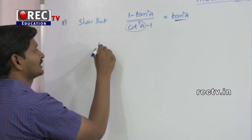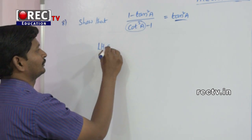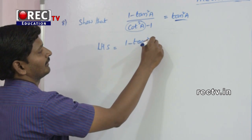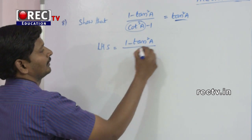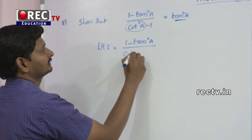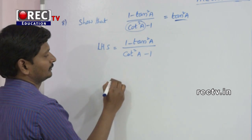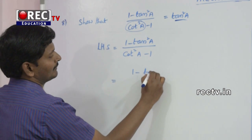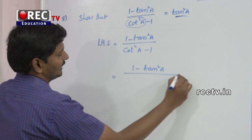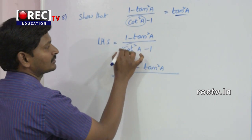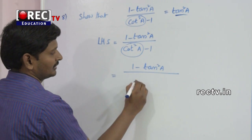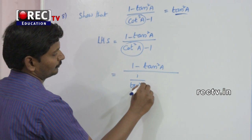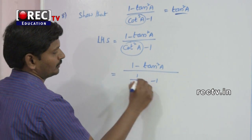LHS is equal to (1 - tan²a) divided by (cot²a - 1). Here, cot²a is equal to 1/tan²a, so the denominator becomes 1/tan²a minus 1.